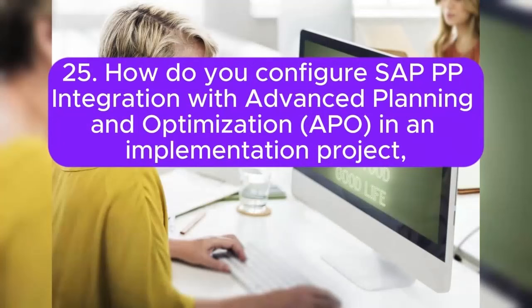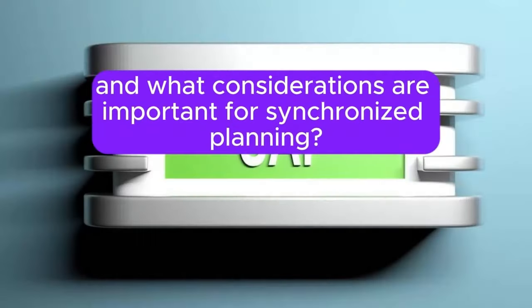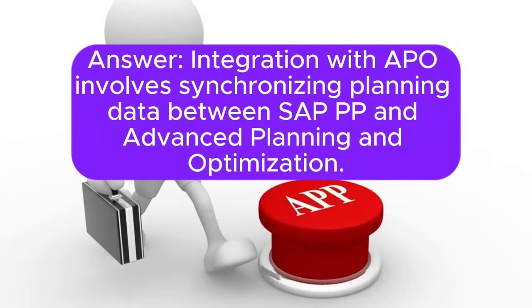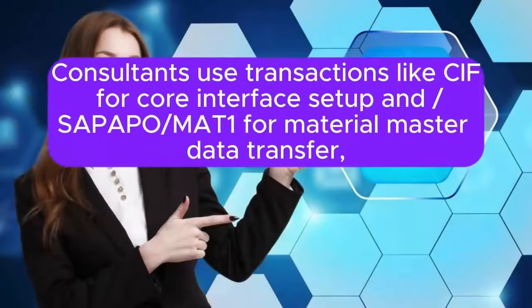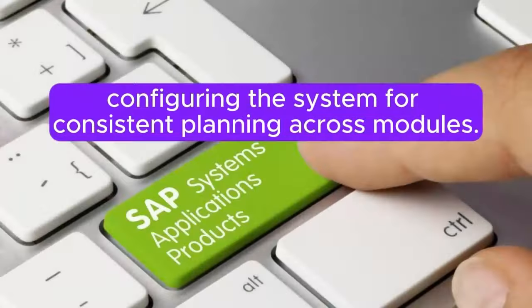Question 25: How do you configure SAP PP integration with Advanced Planning and Optimization (APO) in an implementation project, and what considerations are important for synchronized planning? Integration with APO involves synchronizing planning data between SAP PP and Advanced Planning and Optimization. Consultants use transactions like CIF for core interface setup and SAP APO MAT1 for material master data transfer, configuring the system for consistent planning across modules.